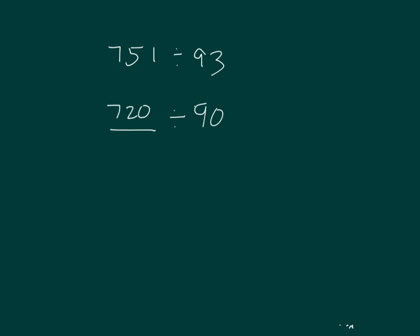Think of our basic fact: 72 divided by 9, which equals 8. So 720 divided by 90 equals 8. And our estimated quotient, then, is 8. So knowing a basic fact can help us solve this problem.